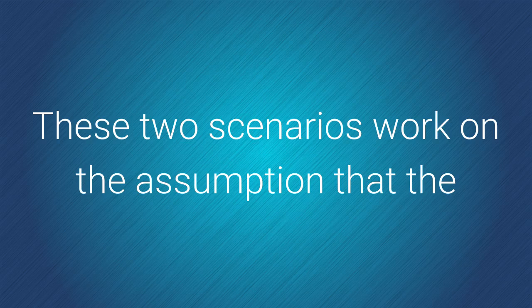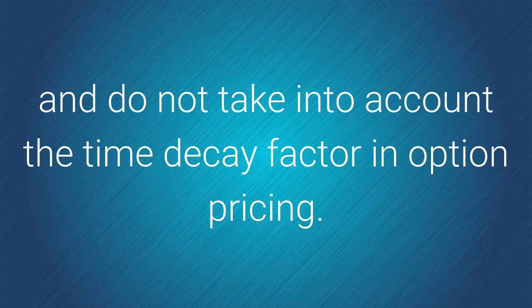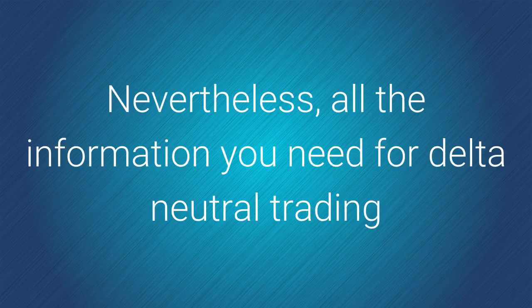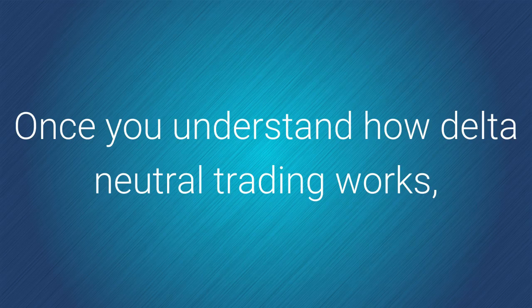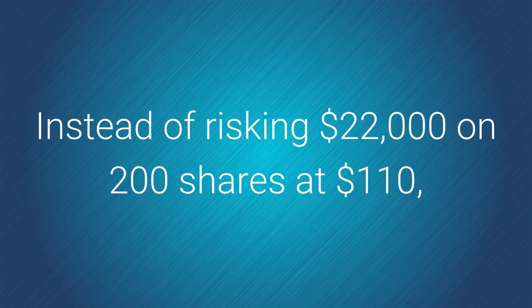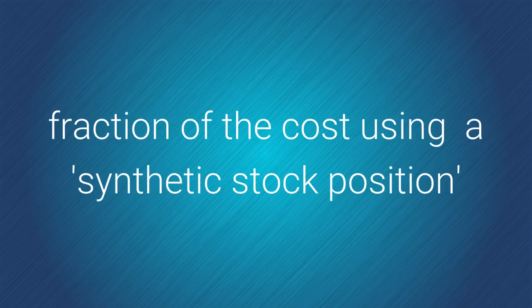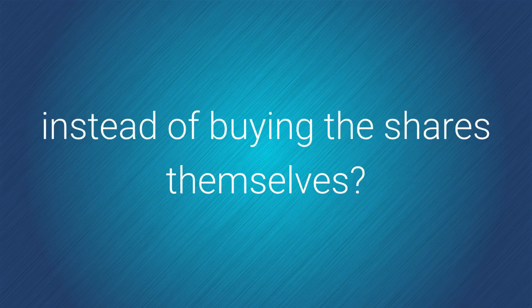These two scenarios work on the assumption that the underlying price movements will be in the short term and do not take into account the time decay factor in option pricing. Nevertheless, all the information you need for delta neutral trading can be obtained from looking at the option strike price table on your broker's site. Once you understand how delta neutral trading works, why limit yourself to hedging shares? Instead of risking $22,000 on 200 shares at $110 each, why not set up the same position for a fraction of the cost using a synthetic stock position — that is, buying calls and selling puts at the same strike price, instead of buying the shares themselves?